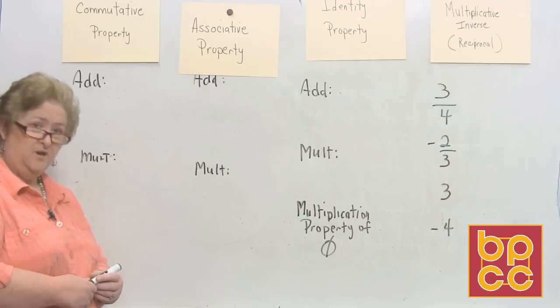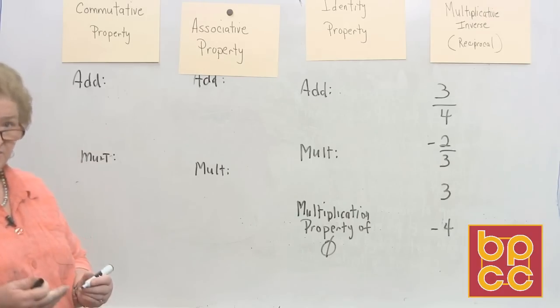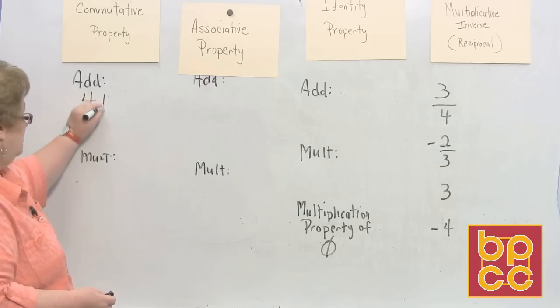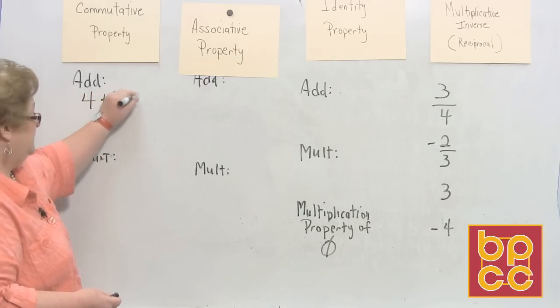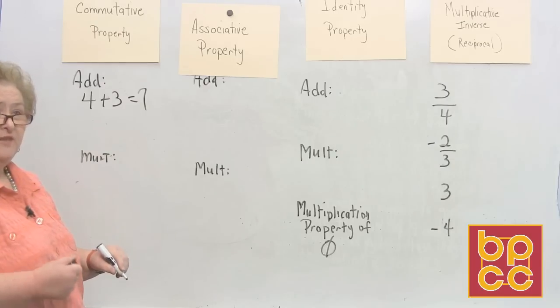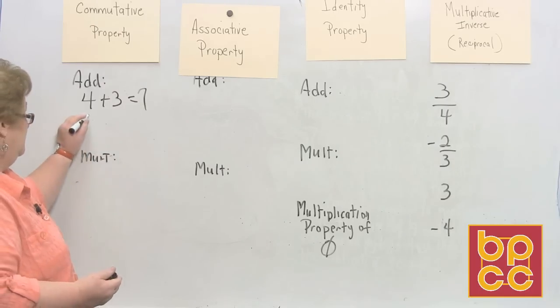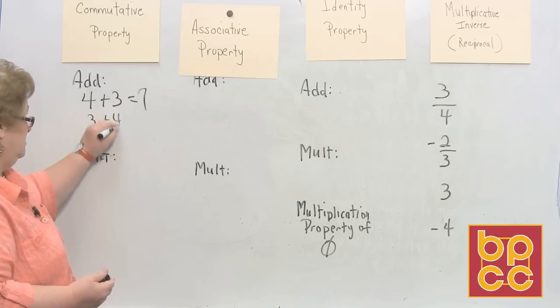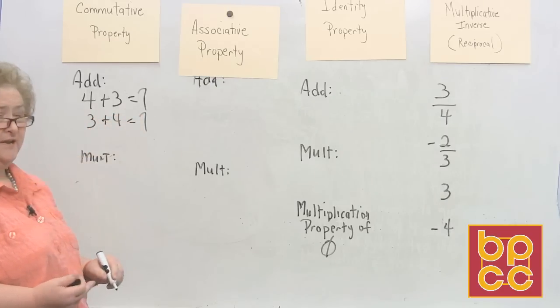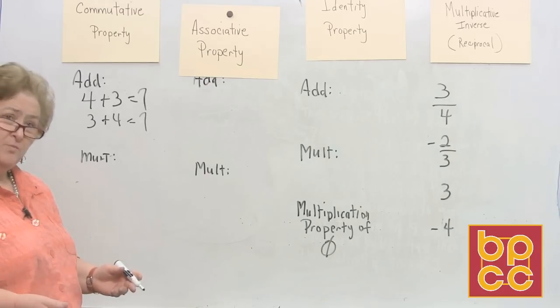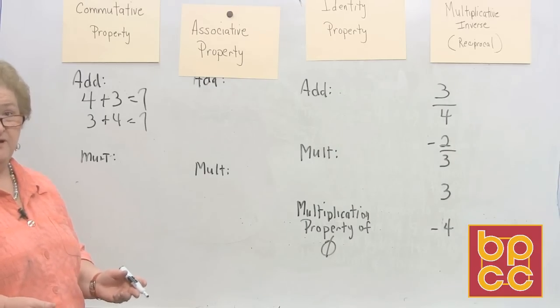So to show you an example of the commutative property for addition, it would simply be something like this. If I have 4 plus 3 is 7, then the commutative property says that I can also add 3 plus 4 is 7 and get the very same answer. The order doesn't matter in addition, and when you switch places, that's the commutative property of addition.